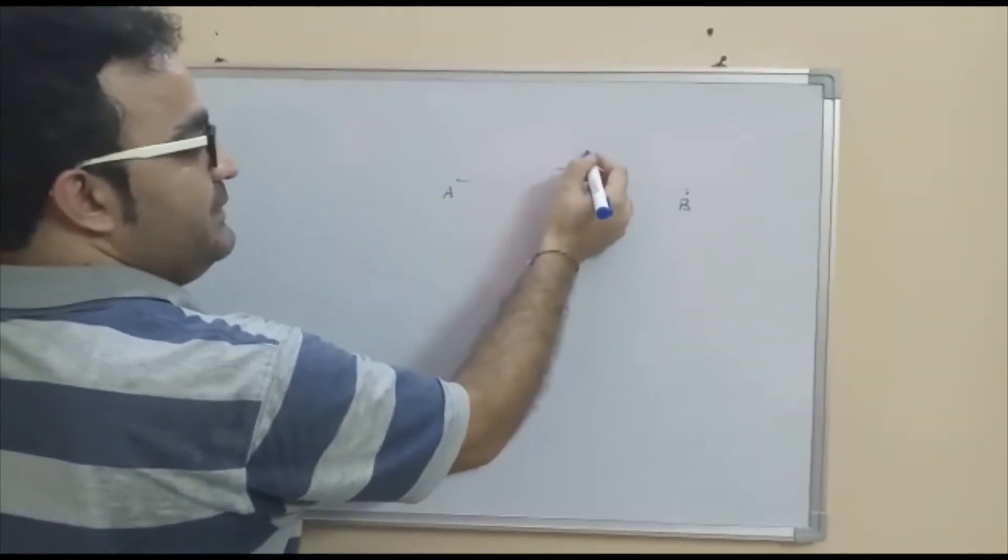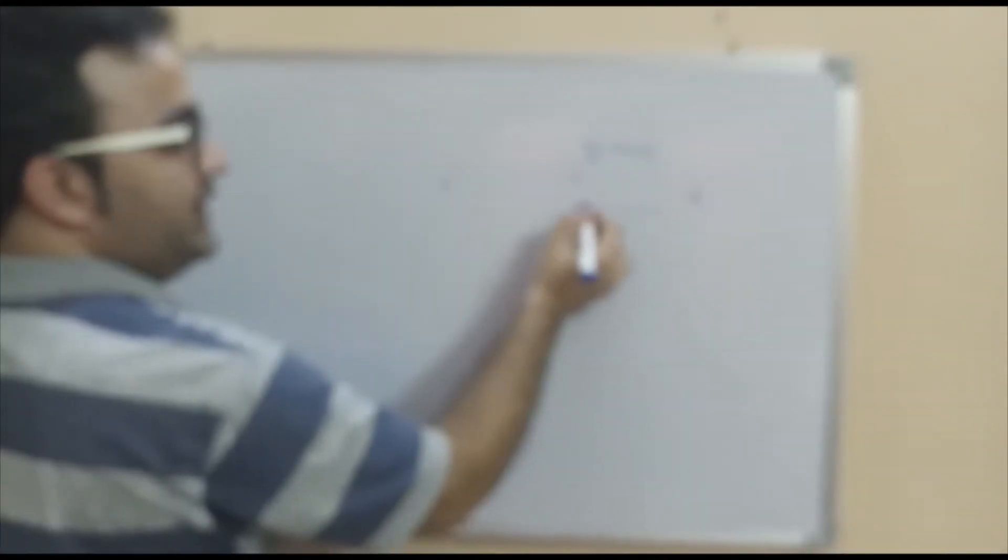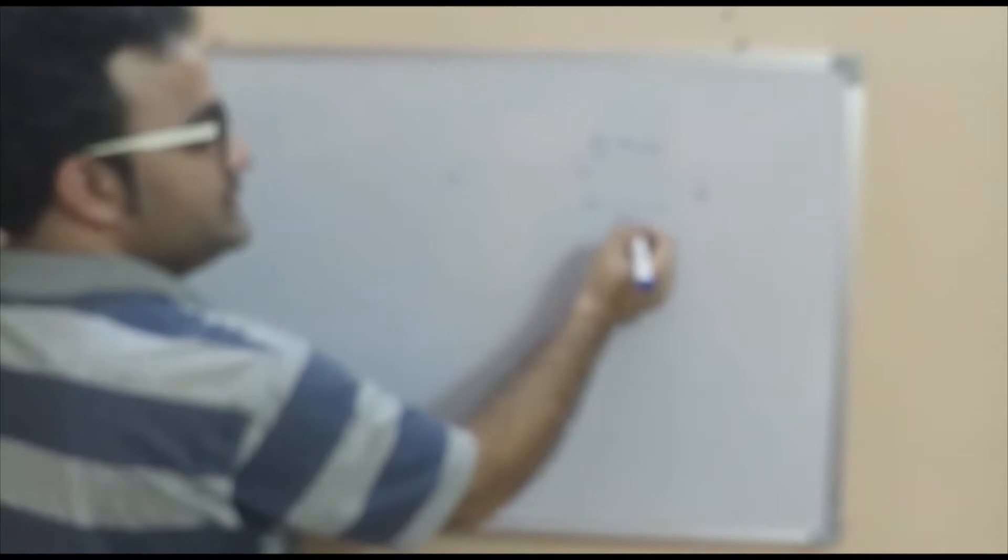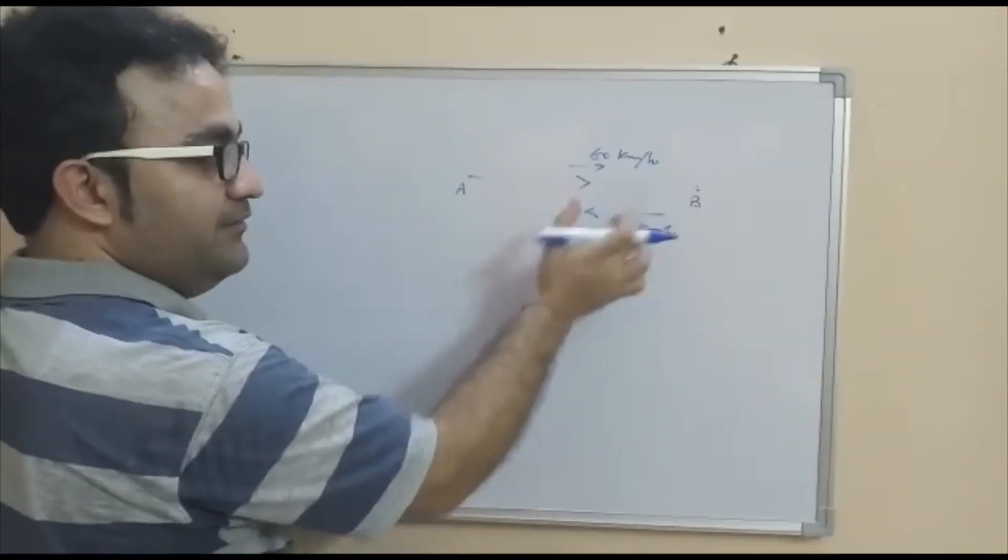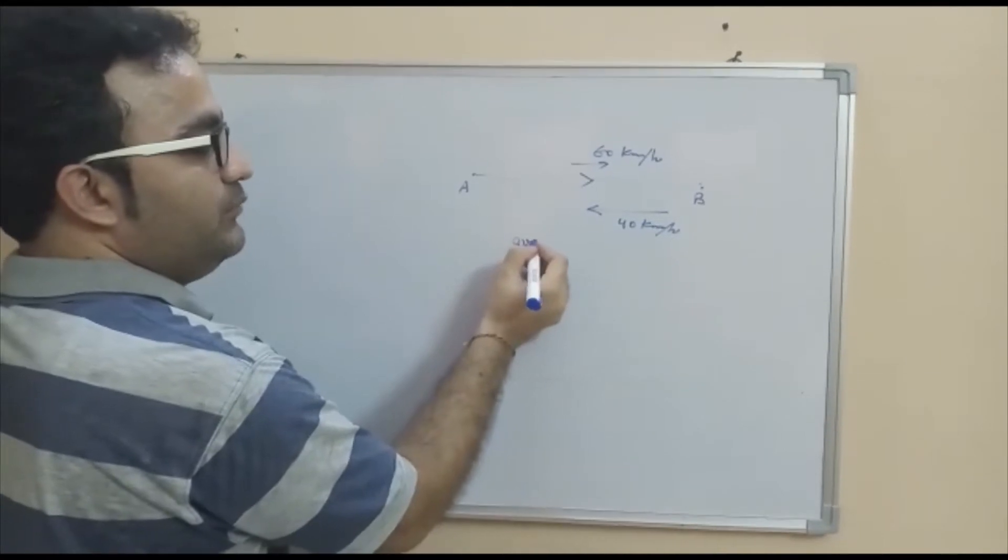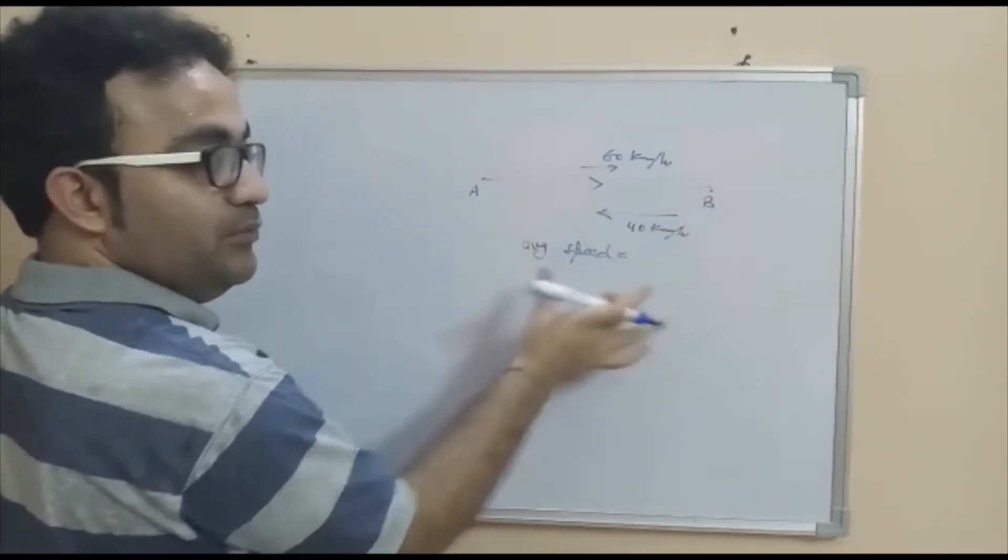And let's suppose the speed of the body is 60 km per hour and that body is returning with a speed of say 40 km per hour. And they are asked to find the average speed. So you know the formula for average speed? That is the total distance upon total time.